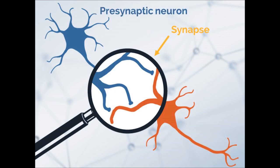We refer to the upstream neuron — the blue one — as the presynaptic neuron, and the downstream neuron — the red one — as the postsynaptic neuron. Communication from the presynaptic neuron tells the postsynaptic neuron how it should act. Can you imagine having a thousand to ten thousand people telling you how to behave?